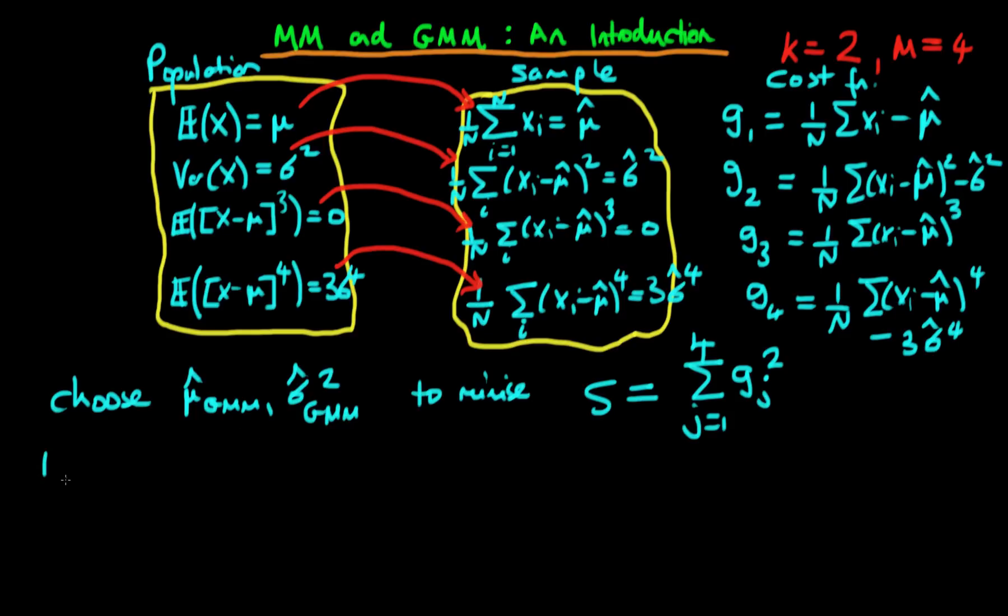But we can ask ourselves, is this the best solution? In other words, are there other solutions or other choices as to the cost function, or in terms of S here, that we could choose that might be superior to just minimizing the sum of individual deviations squared?